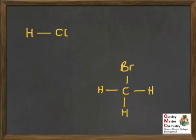It's perfectly possible for a permanent dipole, permanent dipole intermolecular bond to form between two molecules that aren't identical to each other, as long as both of them have a permanent dipole. So here's a question to leave you with: do a drawing showing the permanent dipole, permanent dipole intermolecular bond that could form between these two molecules. Thank you.